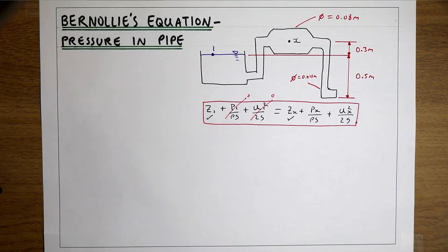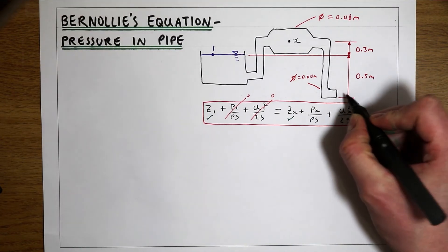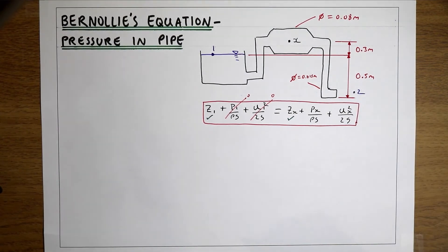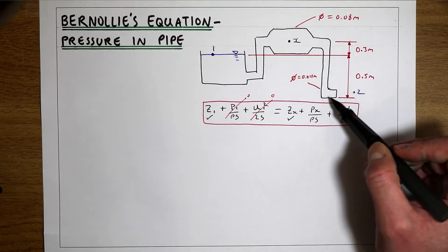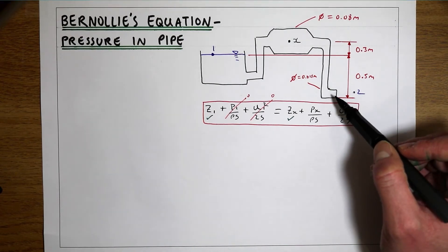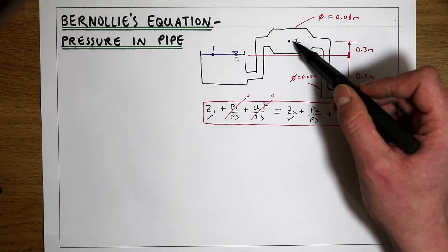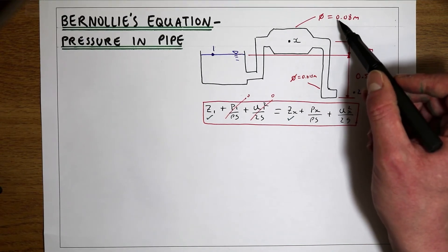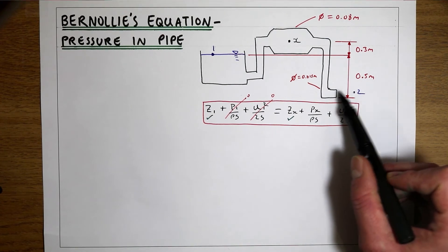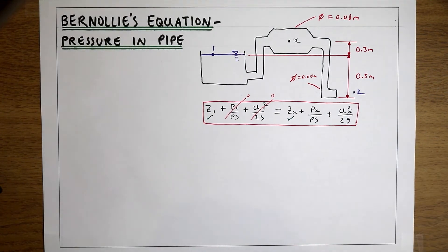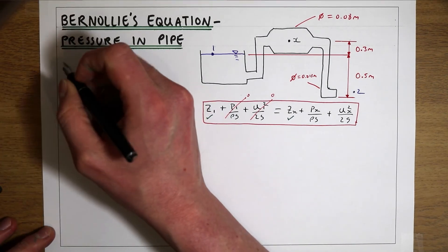What we can do is use the principle from the first Bernoulli video: find the velocity coming out of the pipe at point two. If we get that velocity, we can work out the flow because we have the diameter and therefore the area of the pipe at point two. Once we have the flow, we can work out the velocity at X because we have the diameter of the pipe at X. So we want to work out the velocity at the outlet of this pipe — exactly the same approach as a few videos ago.